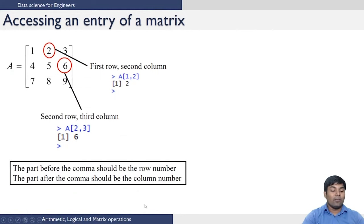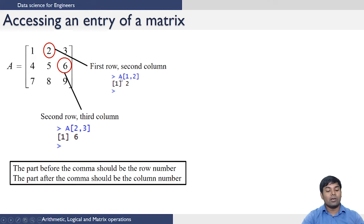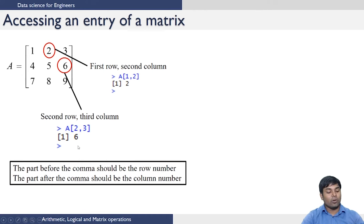If you want to access a specific entry of a matrix you use a similar convention. For example to access the element in the first row and second column, the command is A[1,2], which gives you the output 2. If you want to access the element 6, which is in the second row and third column, you say A[2,3] and it gives you the output 6. The part before the comma refers to the row number and the part after the comma refers to the column number.